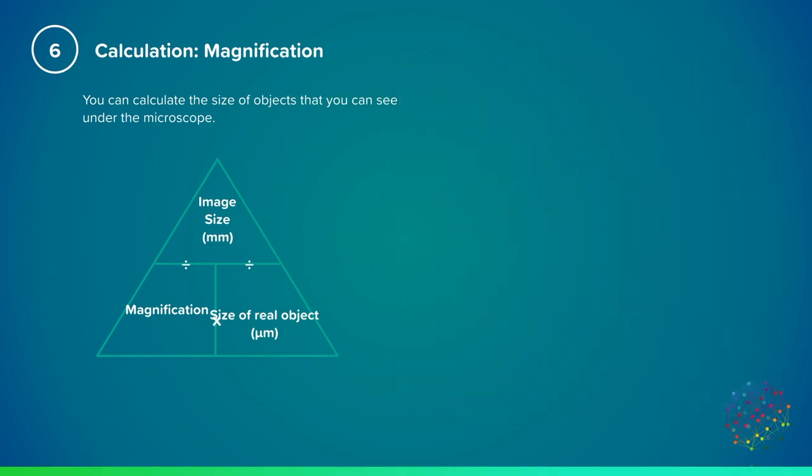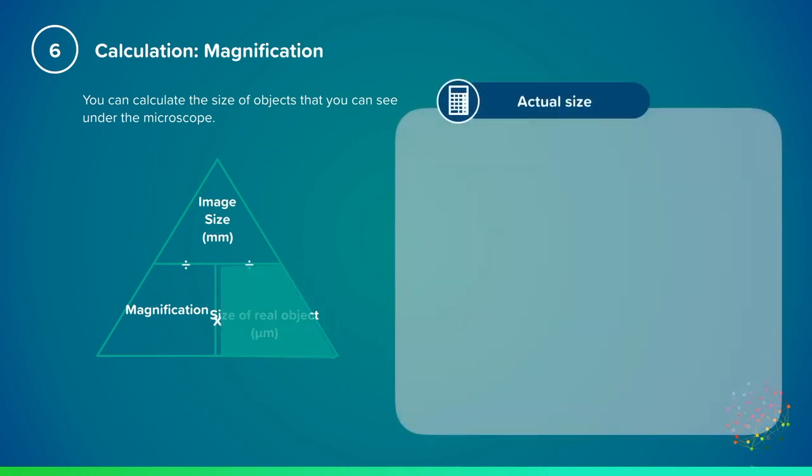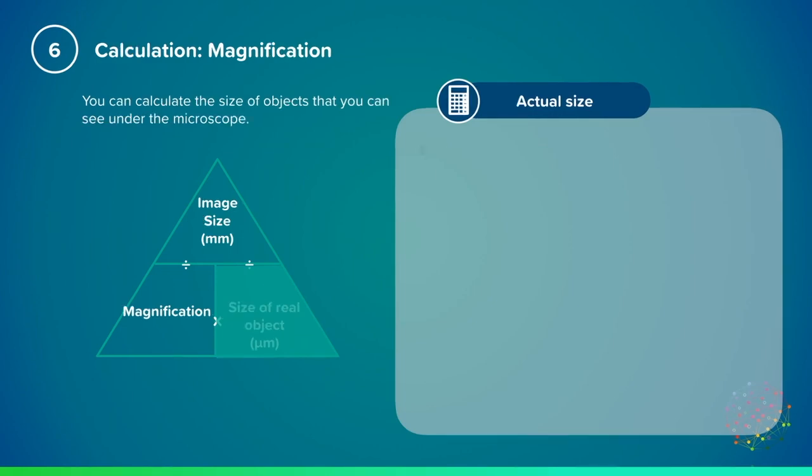We can use the equation triangle on the left to help us calculate the real size of the object. So, we'll cover up that portion of the triangle, and we'll write out our formula. We want to calculate the real size of the object, so we're going to need to divide the image size by the magnification.